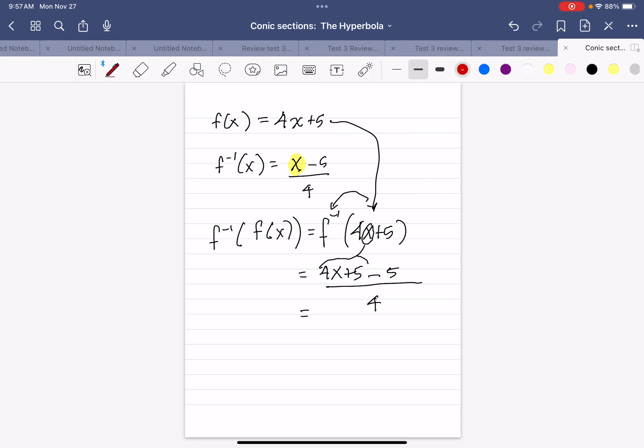And so the fives will cancel out, and I'm left with 4x divided by 4. The fours will divide out, and I'm left with x again. So I have verified it. I have verified f inverse of x. So now I know that this is the correct inverse.